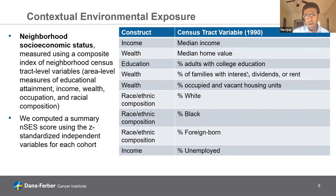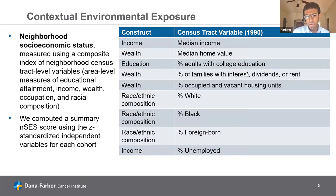For our neighborhood socioeconomic status measure, we constructed a scale using multiple census tract variables corresponding to the 1990 decennial census at the participant address. There were nine variables ultimately chosen, reflecting income, wealth, education, and racial and ethnic composition. We z-standardized these variables and then summed them to create a summary score reflecting a multi-dimensional measure of socioeconomic status for participants.